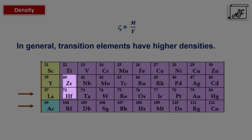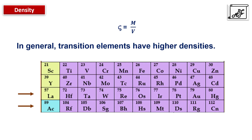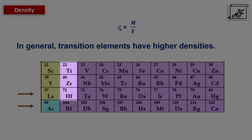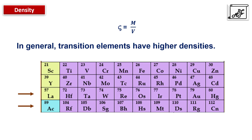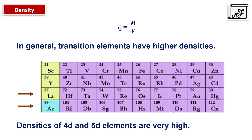In fact, most elements of the 4D and 5D transition series are called chemical twins. When we go from top to bottom — for example, titanium, then zirconium, then hafnium — the size should increase, but due to lanthanoid contraction, the size of hafnium is almost the same as that of zirconium. Mass increases but size almost remains the same. That is how, when we go from top to bottom, the densities of 4D and 5D elements are very high.